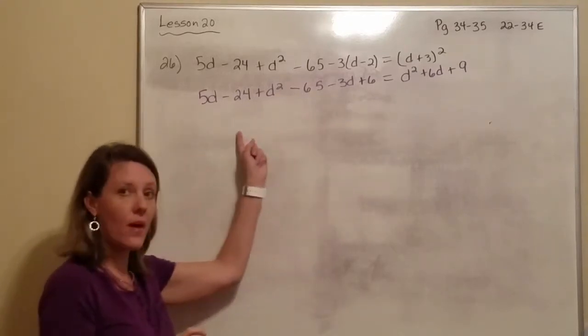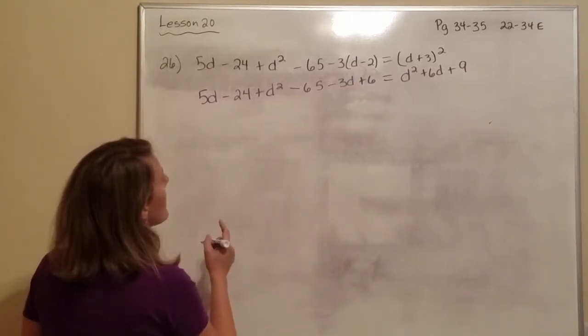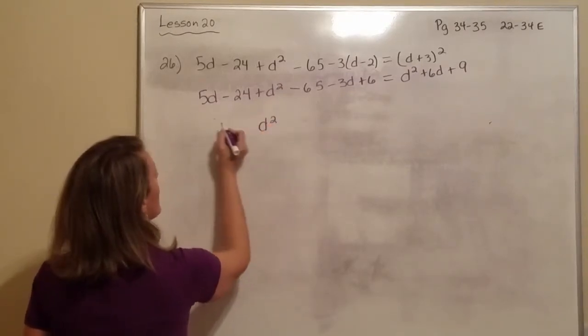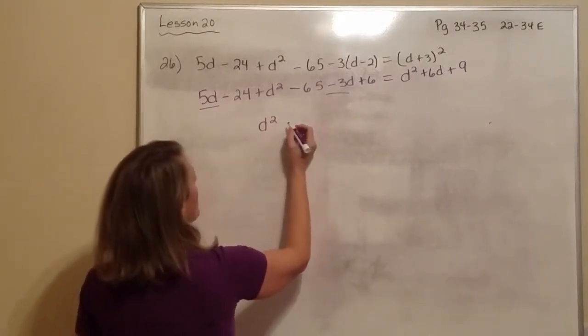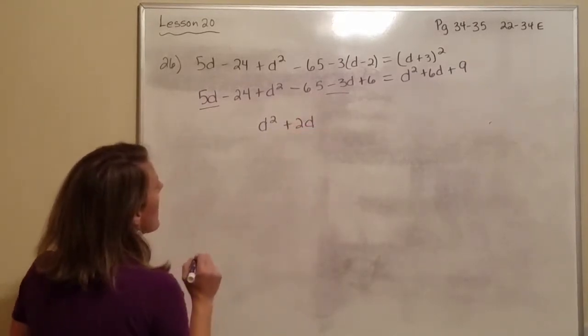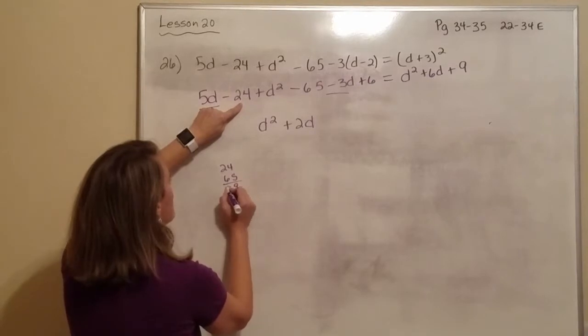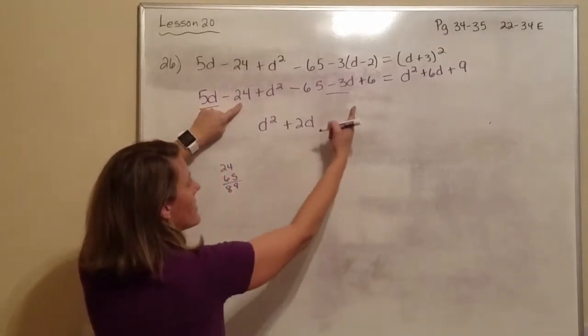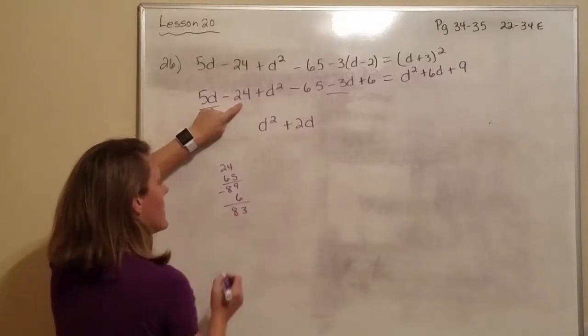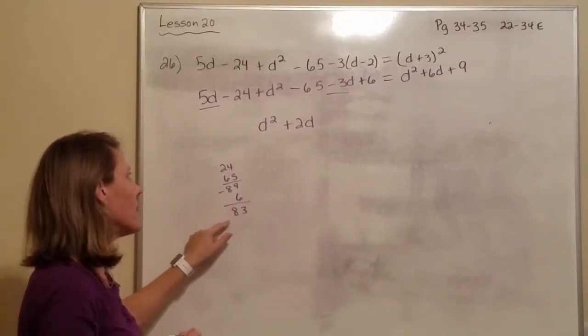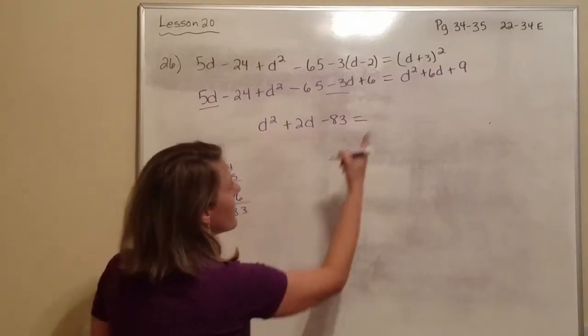Now, on this side, let's simplify. And this side is already simplified, but let's see what we can put together here. Alright, we only have one D squared, so I'm going to write that down. And our Ds, we can put together. So 5 minus 3 would be a positive 2D. And then our numbers, we have 24 and 65, which is 89, but then we're going to have that 6. Well, this is a negative and that's a positive. So really, we subtract them and take the sign of the larger. Since 89 is larger, it's going to be a negative 83.